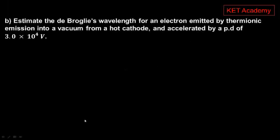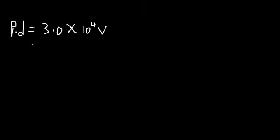The second part says estimate the de Broglie wavelength of an electron emitted by thermionic emission into a vacuum from a hot cathode and accelerated by a PD of 3.0 times 10 to the power 4 volts.